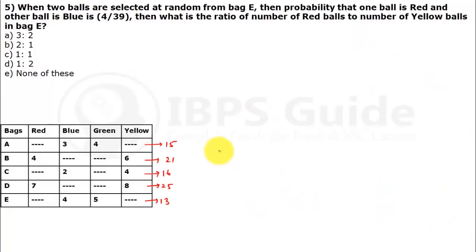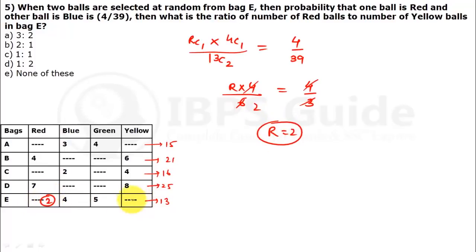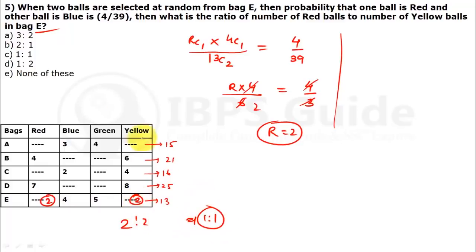Next question, the last one: when two balls are selected at random from bag E, the probability that one ball is red and the other ball is blue equals 4 upon 39. So RC1 times 4C1 over 13C2 equals 4 upon 39. Breaking it: R×4 over 13×12 divided by 2 equals R×4 over 13×6. So R×4 equals 4 upon 39 times 13×6 equals 4×2, giving R equals 2. So red value is 2. We can remove yellow — putting all values in: 2, 5, 4 gives 9, or remaining is 4 for yellow. What is the ratio of red to yellow balls? Red is 2 and yellow is also 2, so the ratio is 1:1 — option number C.